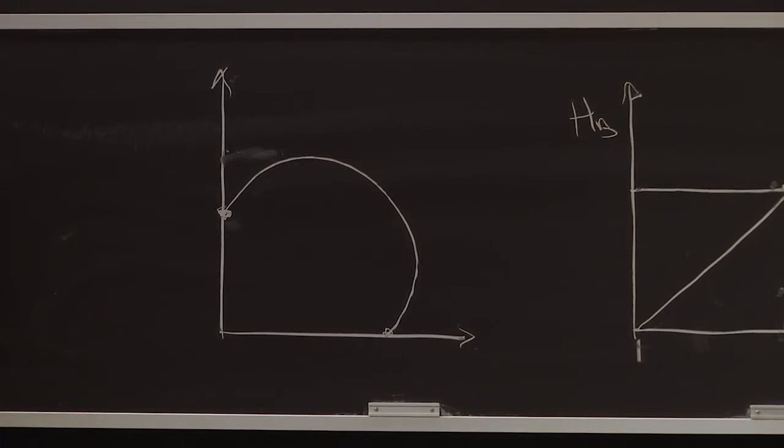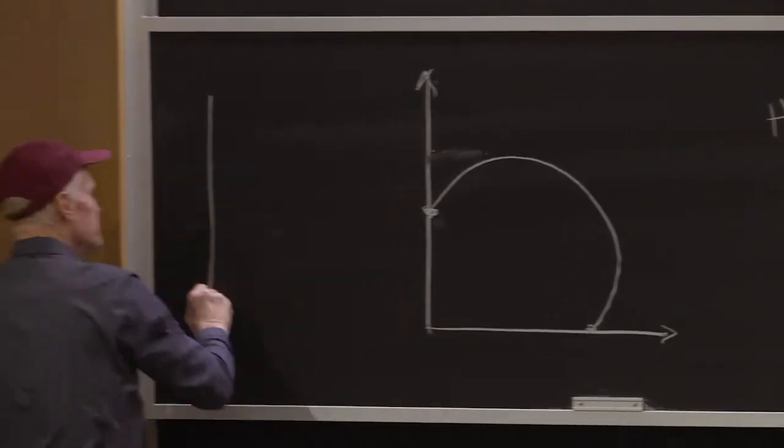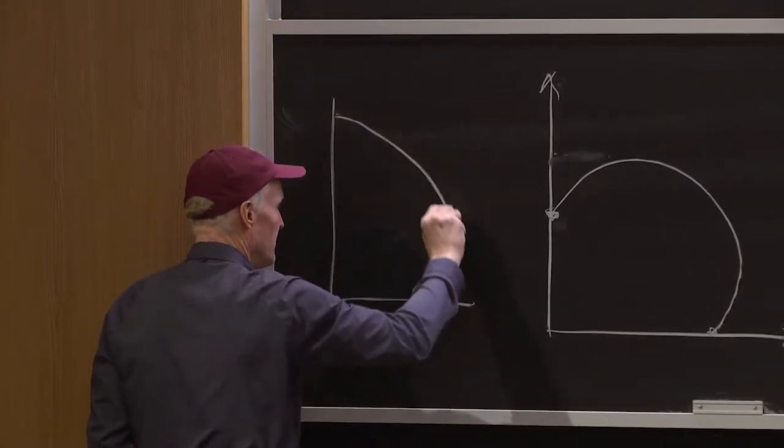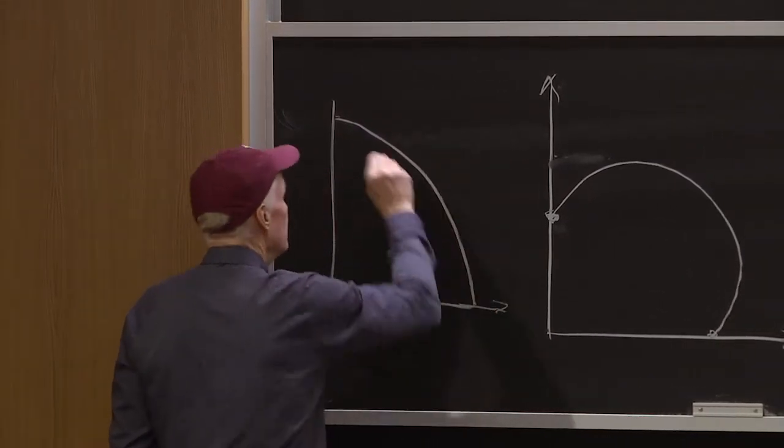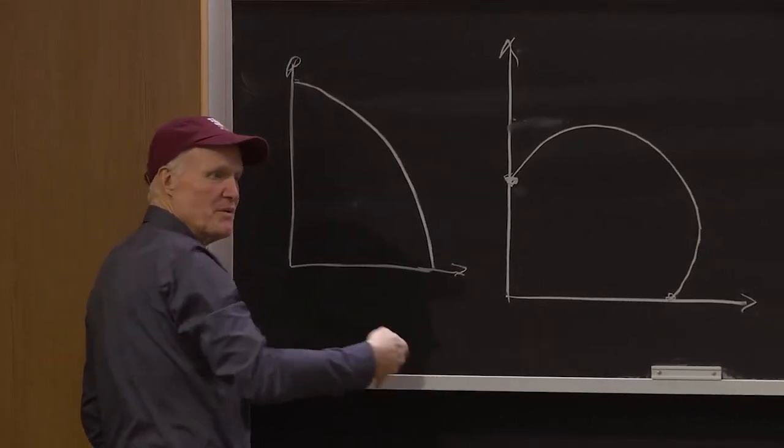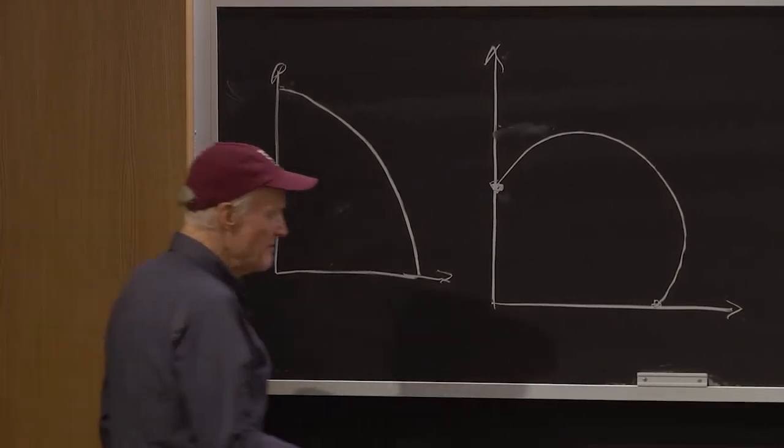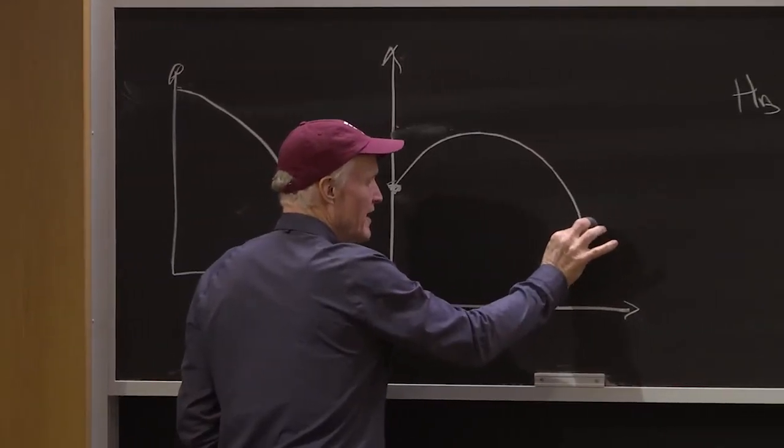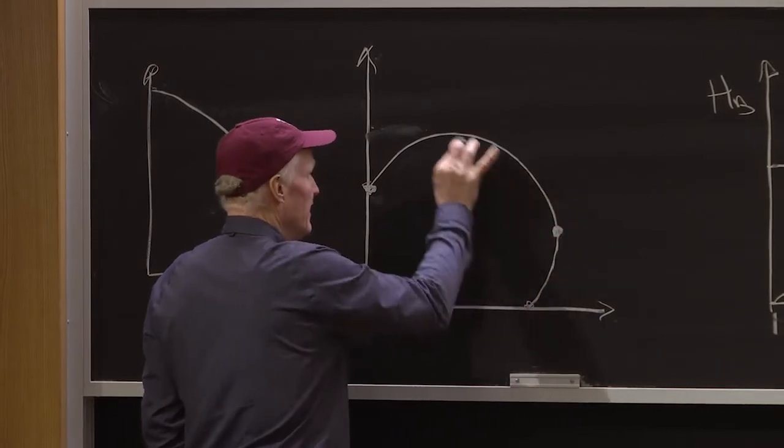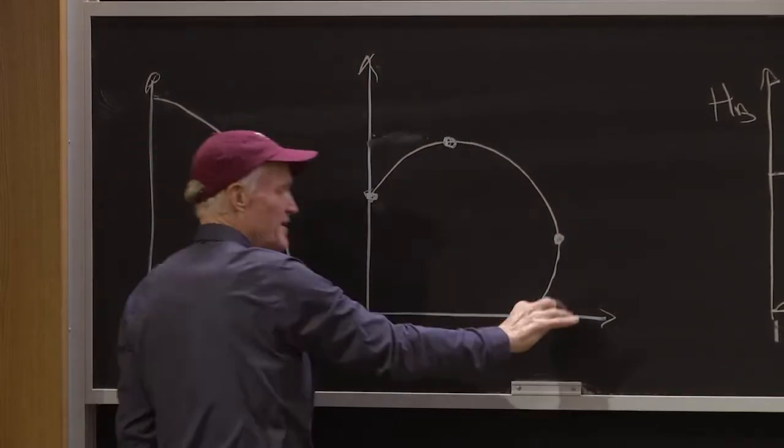You might say, well, why doesn't it look like this? Why isn't it more like a standard production possibility frontier? And the answer is, well, think of this as my skills as a carpenter and this is my skills as a plumber. This is plumbing and this is carpentry.